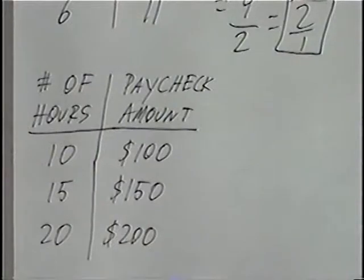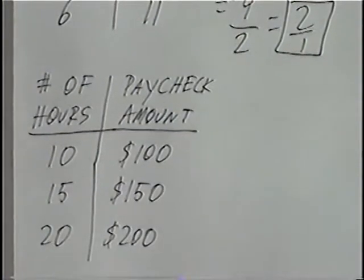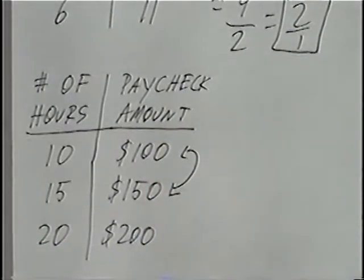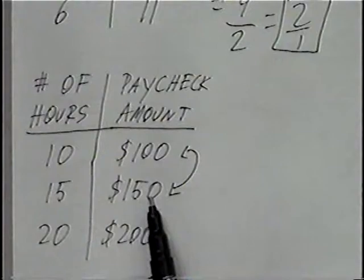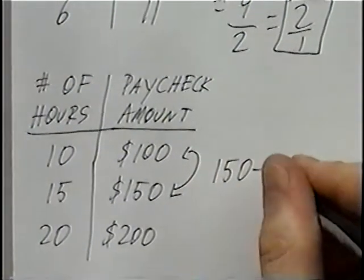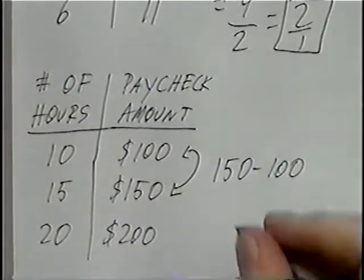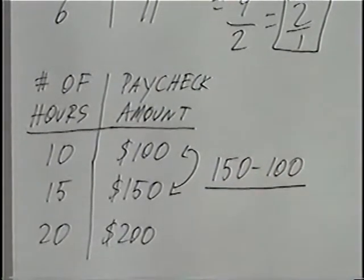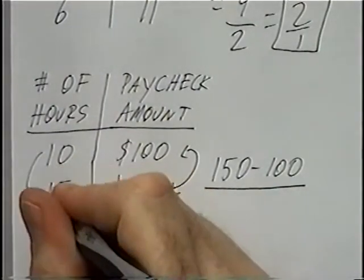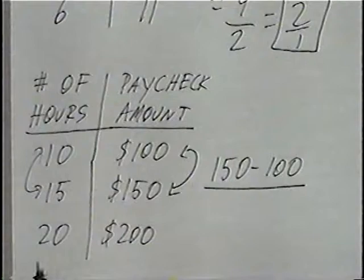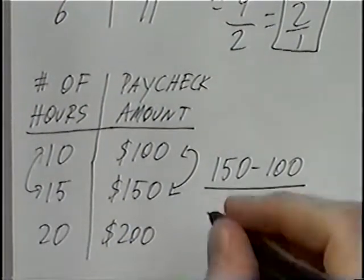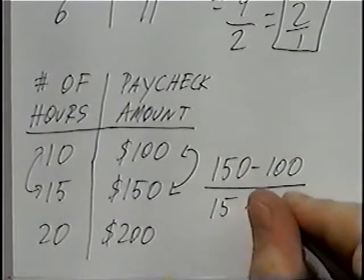For this problem we again find the rate of change. You can pick any two numbers on the right side of the table — normally we just choose the first two numbers. We subtract the second number minus the first number: 150 minus 100. We make this a fraction, and for the denominator we pick those same two matching numbers on the left side, which are 15 and 10, then subtract: 15 minus 10.